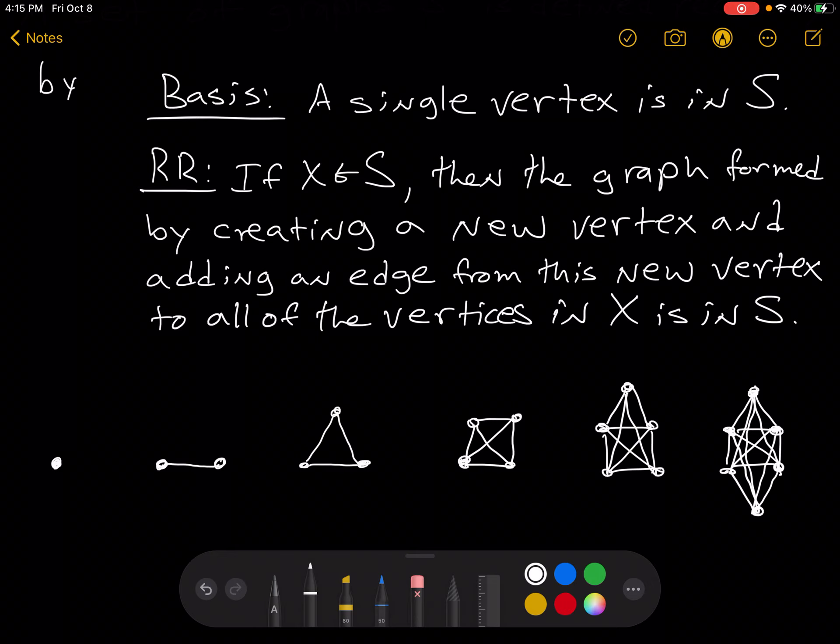And we just keep going like this forever and ever and ever. And this is all of the graphs in the set S. And notice that, you know, dot dot dot, this goes on forever. Notice that this is all of the complete graphs.